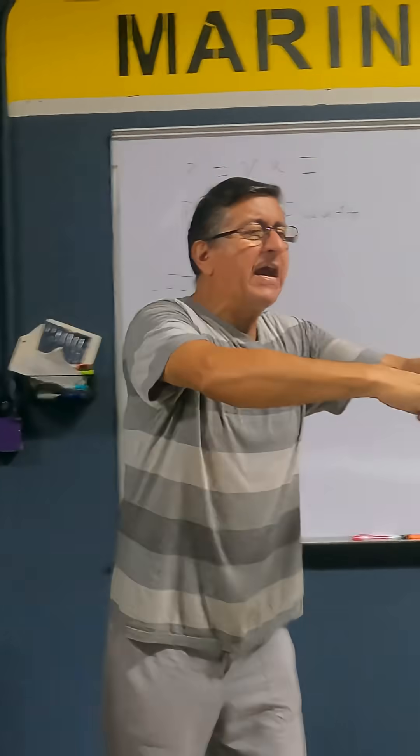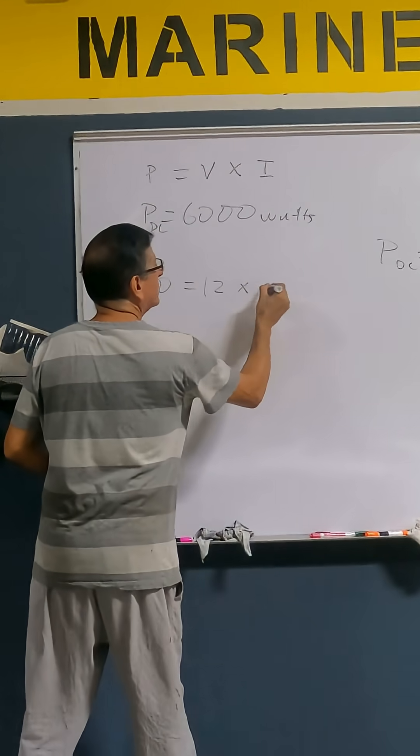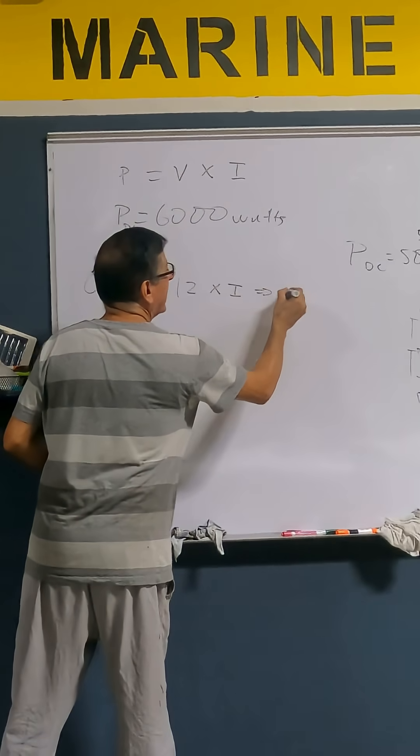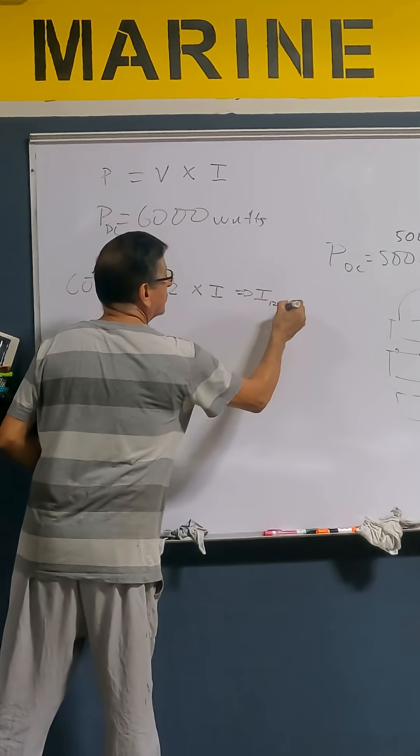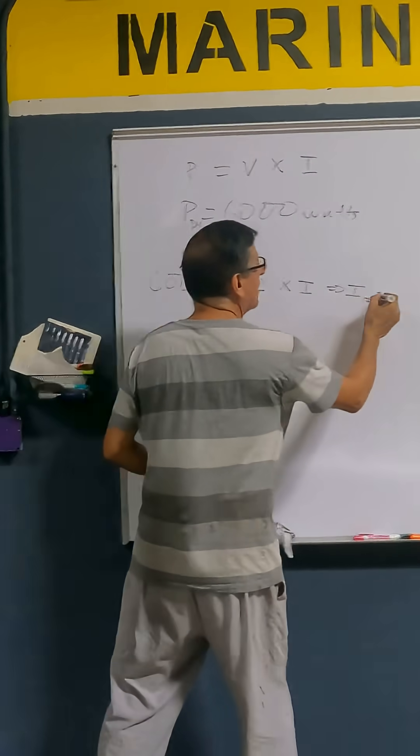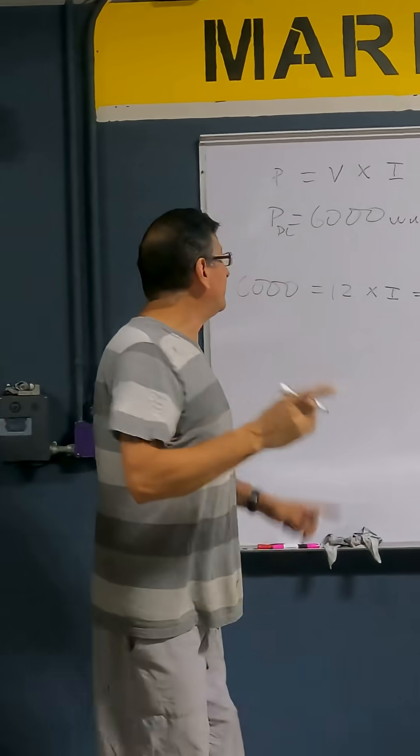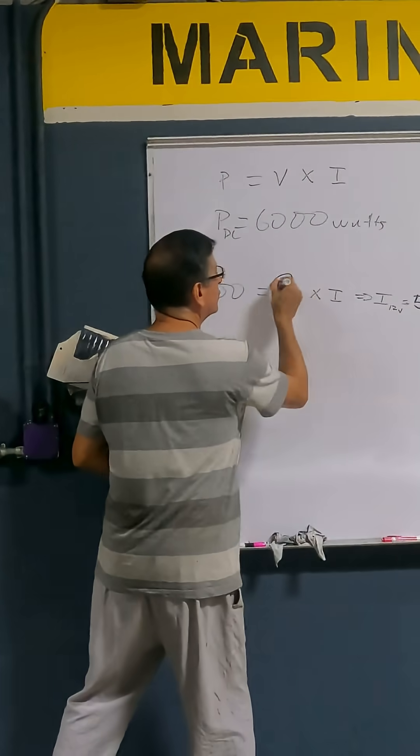Suppose that I am going to organize my batteries in 12 volts. 12 volts times the intensity. How much should be the intensity if the system is 12 volts? The intensity will be 6,000 divided by 12. How much is that? 500 amps. Alright, this is if I use 12 volts.